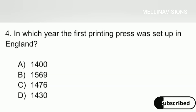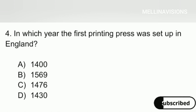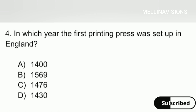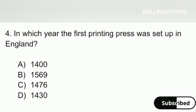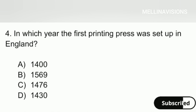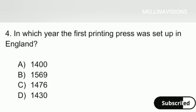In which year was the first printing press set up in England? Options are: A. 1400, B. 1569, C. 1476, D. 1430.